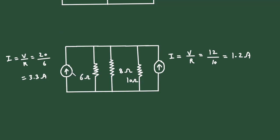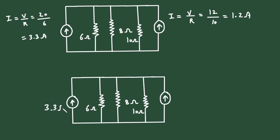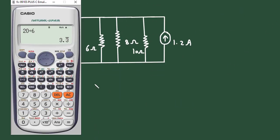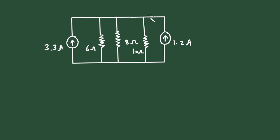Here we can see the direction of this current source is upward and the direction of this current source is also upward — they have the same current direction, so they get added. Adding them: 3.3 ampere plus 1.2 ampere gives 4.5 ampere. We will erase these and make it a single current source of 4.5 ampere.